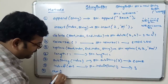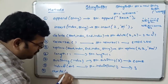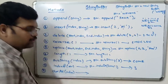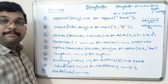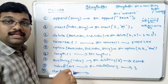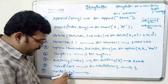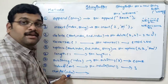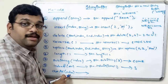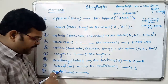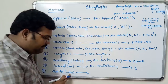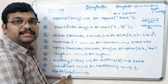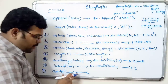The next method is charAt(). This is also the same method we have seen in the String class. It takes one parameter — the index — and it will return the character available at that particular index.